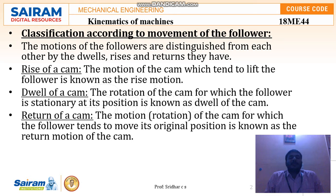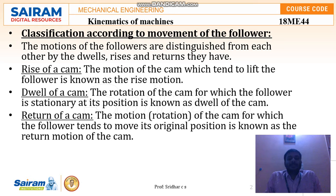The classification according to the movement of followers refers to the movement that takes place in the follower. The CAM can only rotate and transmit motion, while the follower follows the path provided by the CAM. Hence all motion depends upon the rotation of the CAM only — either rotational or translational — and the follower's function is simply to follow the CAM's path.